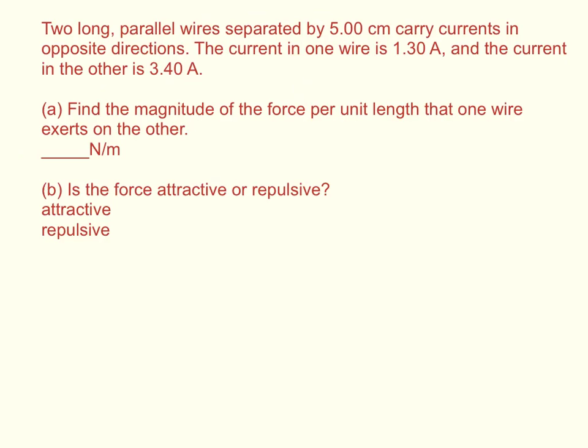Two long parallel wires separated by 5 centimeters carry currents in opposite directions. The current in one wire is 1.3 amps and the current in the other is 3.4 amps. Find the magnitude of the force per unit length that one wire exerts on the other. Is the force attractive or repulsive?